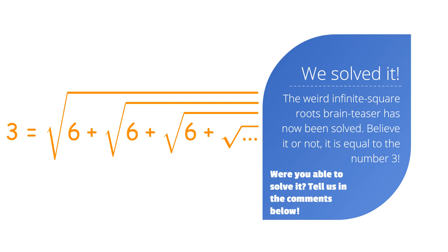We solved it. The weird infinite square root brain teaser has now been solved. Believe it or not, it is equal to the number 3. Were you able to solve it? Tell us in the comments below.